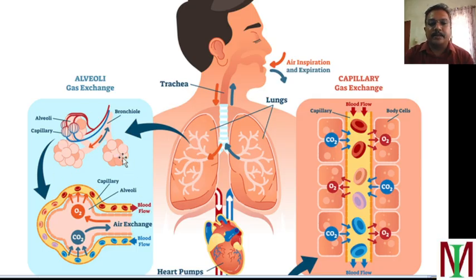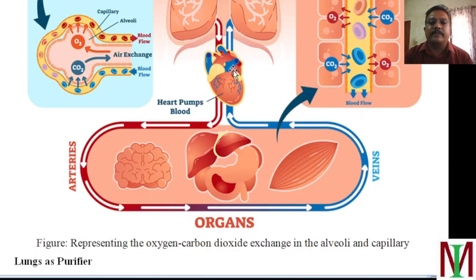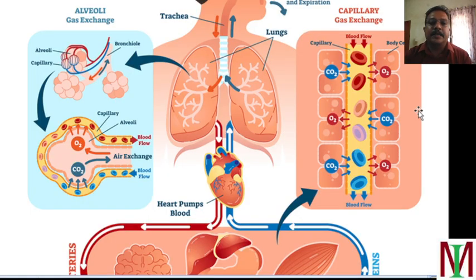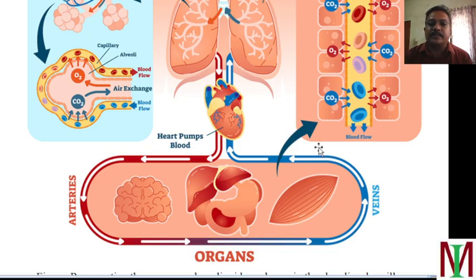That oxygen will be given to the bloodstream through the alveoli gas exchange system. The alveoli gas exchange system will transfer the oxygen to the bloodstream, and the bloodstream will go to the pump — the heart. The heart will pump that oxygenated blood to the entire body system. At the organs, capillary gas exchange takes place, in which the oxygen is taken up by the organs and carbon dioxide is given back through the venous veins.